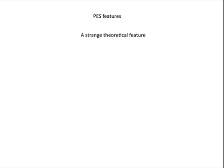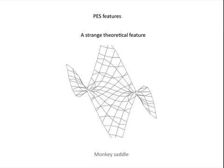Another rather unusual theoretical feature is called the monkey saddle. This is, in principle, capable of connecting three different minima. But it is quite rare, if not nearly impossible to find.